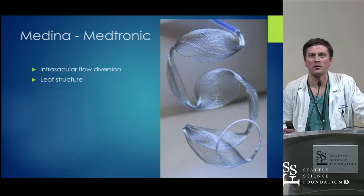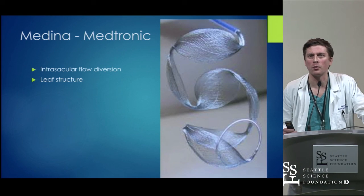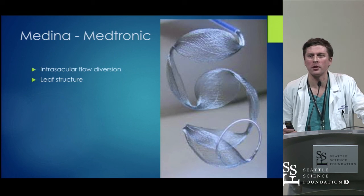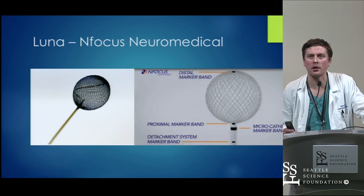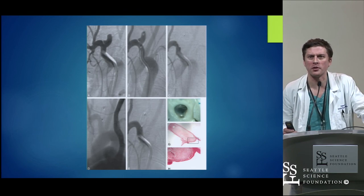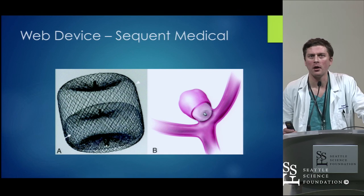For intrasacular flow diversion, there is a very exciting device called the Medina — it's a hybrid between a coil and a flow diverter. It's an intrasacular flow diverter with leaves of Pipeline-like material that fill up the aneurysm and divert blood flow from within the aneurysm itself. Pascal mentioned the Lunar device — a lollipop-on-a-stick design similar to the WEB for intrasacular flow diversion — showing flow diversion and thrombosis in a rabbit model.